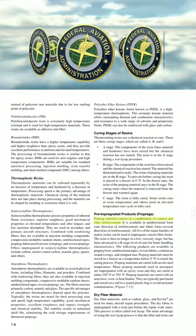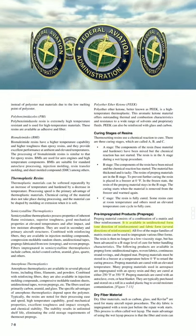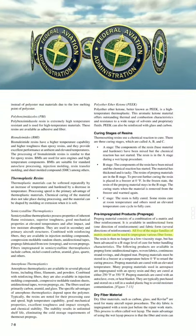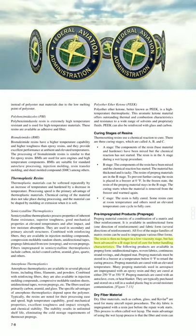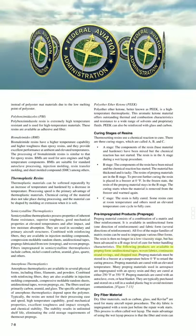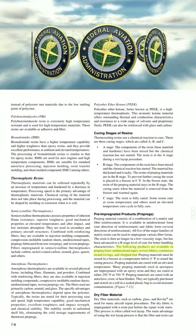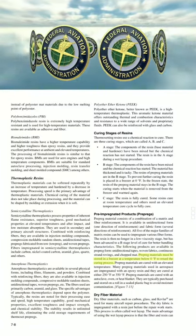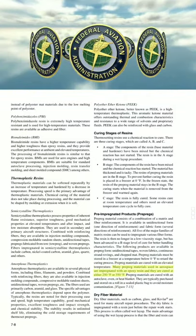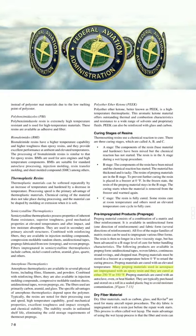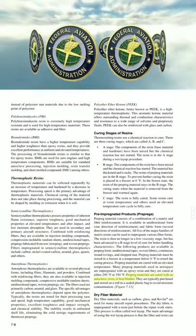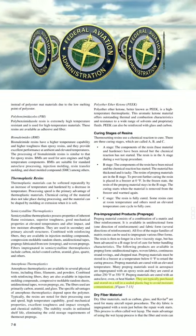Pre-impregnated products (prepregs). Prepreg material consists of a combination of a matrix and fiber reinforcement, available in unidirectional form and fabric form. All five major families of matrix resins can be used to impregnate various fiber forms. The resin is advanced to a B-stage level of cure for better handling characteristics. Products available in prepreg form include unidirectional tapes, woven fabrics, continuous strand rovings, and shop mat. Prepreg materials must be stored in the freezer below 0°F to retard curing and are cured with elevated temperature. Many aerospace prepreg materials are impregnated with epoxy resin and cured at either 250°F or 350°F, using an autoclave, oven, or heat blanket. They are typically purchased and stored on the roll in a sealed plastic bag to avoid moisture contamination.